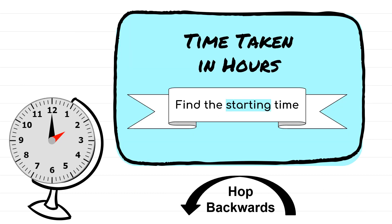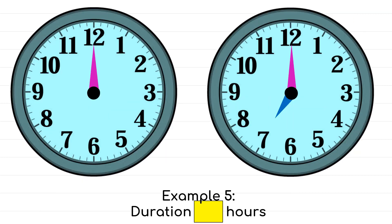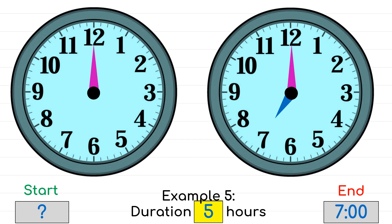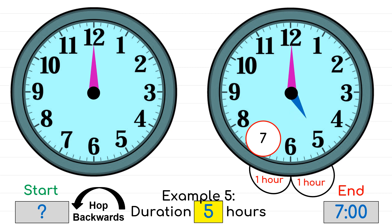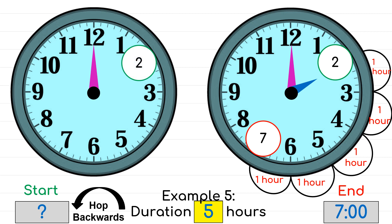In the next couple of examples we will learn how to find the starting time. This time it's going to be different because we need to hop backwards instead. We are given the duration as 5 hours and the ending time pointing at 7 o'clock. We start at 7 and hop 5 times backwards. After hopping 5 times backwards we have reached 2 o'clock, and 2 o'clock is our starting time.